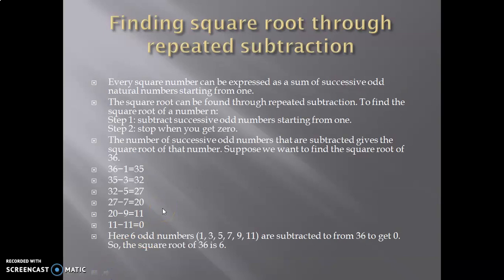Finding square root through repeated subtraction: Every square number can be expressed as a sum of successive odd natural numbers starting from 1. The square root can be found through repeated subtraction. To find the square root of a number n, step 1 is subtract successive odd numbers starting from 1 and stop when you get 0.